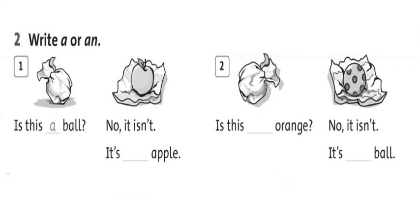Look at number 2. Write 'a' or 'an'. For example, number 1 — is this a ball? No, it isn't. You write 'an' here. Now, do your exercise. Have you finished? Good job. Let's check the answer. Is it an apple? Right? Number 2: Is this an orange? No, it isn't. That's right — it's a ball. Very good. Now let's check the answer in your book, please.